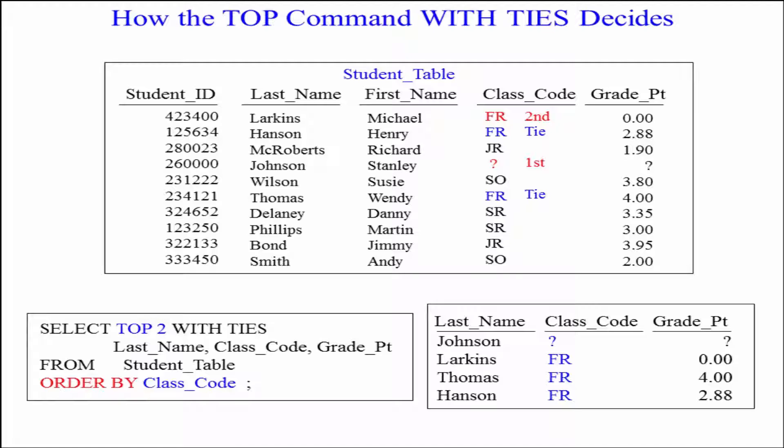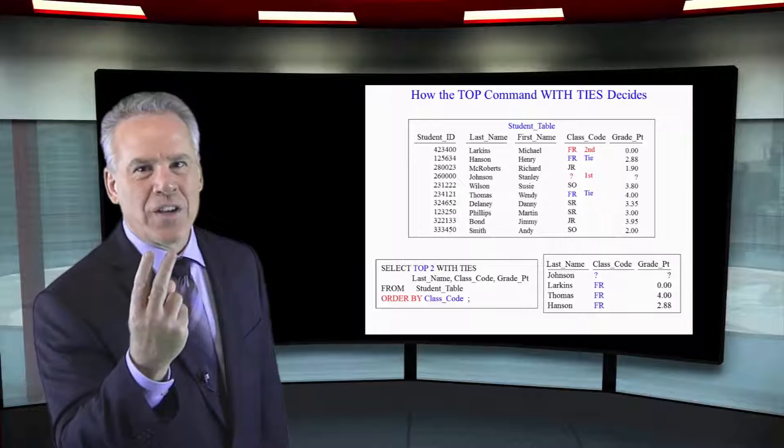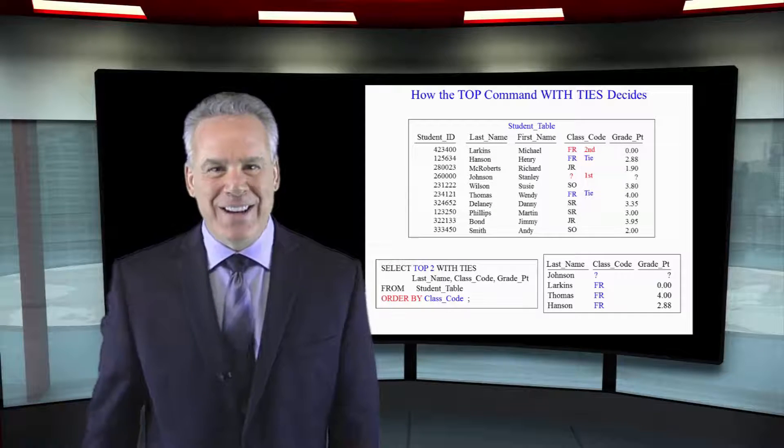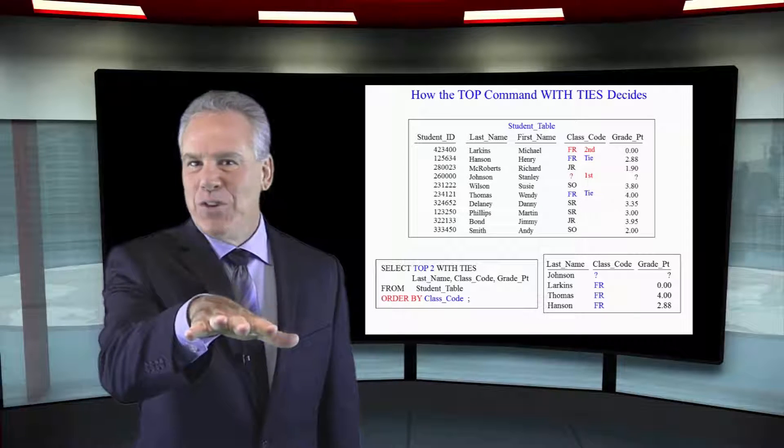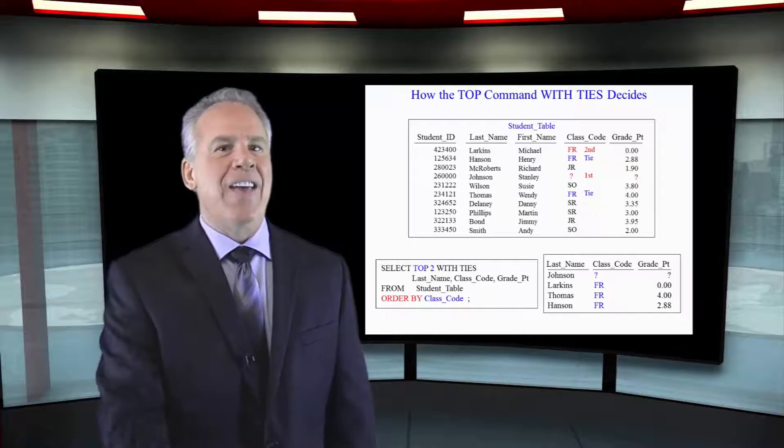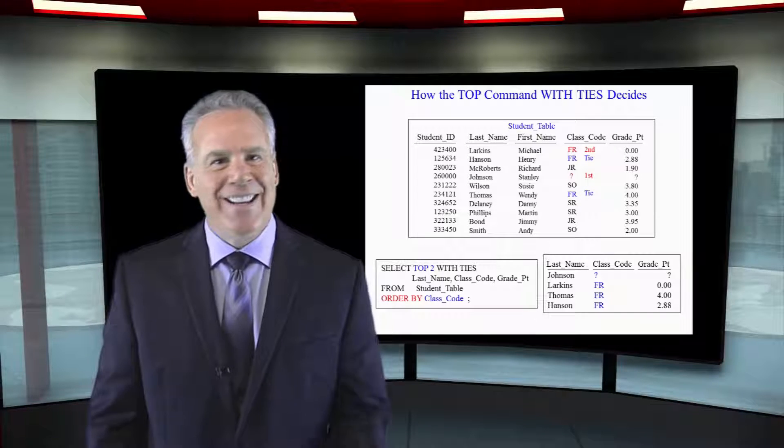The null value came back first. And we want the top two with ties. So secondly, they said, it's a freshman that comes back, Michael Larkins. And they go, there's my top two, but it's with ties. And they go, you know what? We did have more freshmen. There were two more freshmen here. So the null comes back first and then all of the freshmen who tied come back. And that's what with ties is all about.